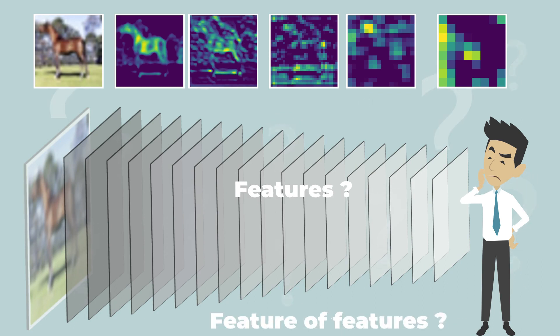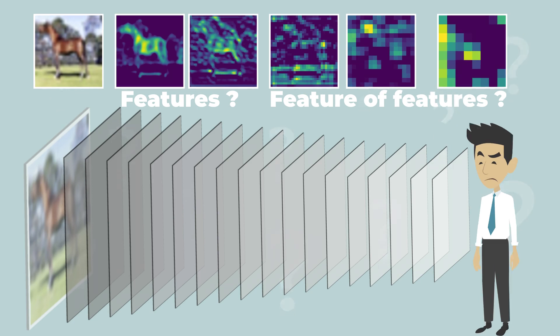Yet, those features and feature of features are not well defined. So how does deep learning actually work? What is the mechanism that makes it so successful?